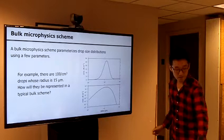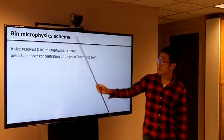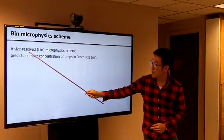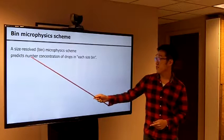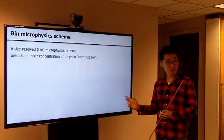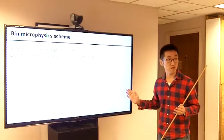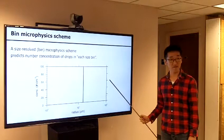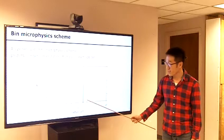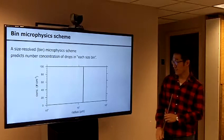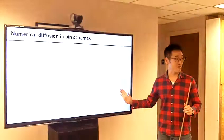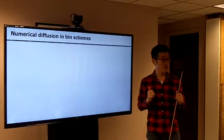The alternative method is the bin microphysics scheme, also called the size-resolved microphysics scheme. It predicts the number concentration of drops in each size bin, and typically uses a few tens to about a hundred bins. Using a bin microphysics scheme, the situation before can be reflected as a delta function — just a peak at 15 micron. So if I stopped here, many of you would think that the bin microphysics scheme is the best and there would be no problem.